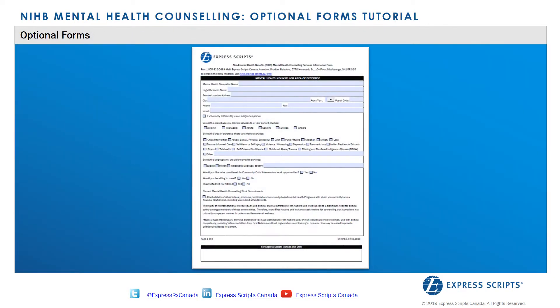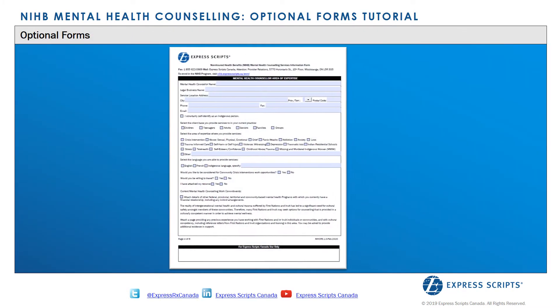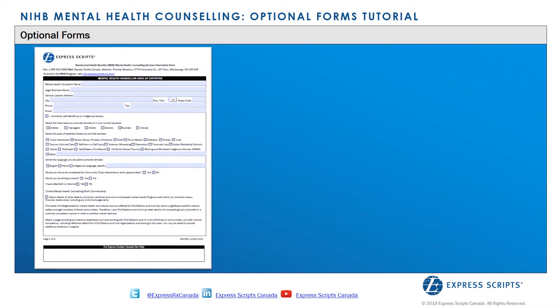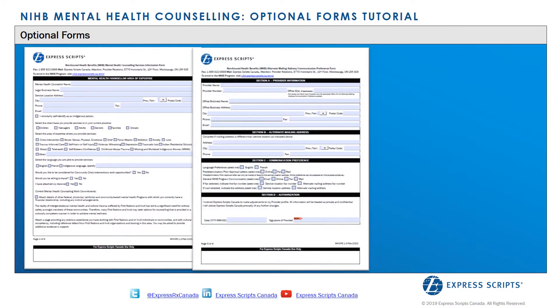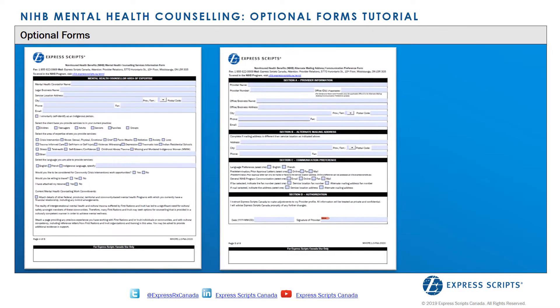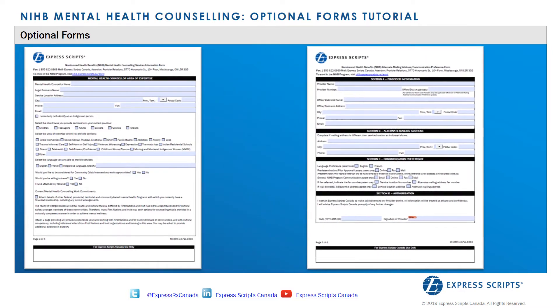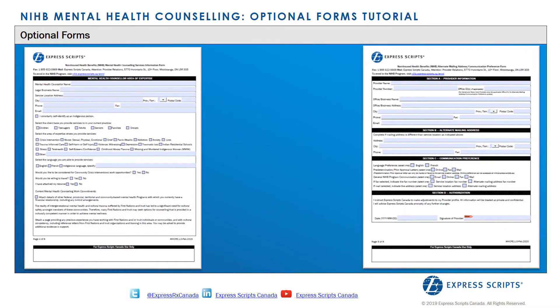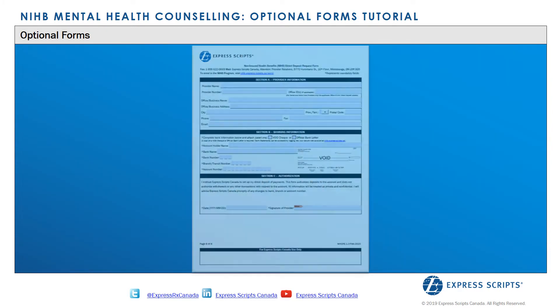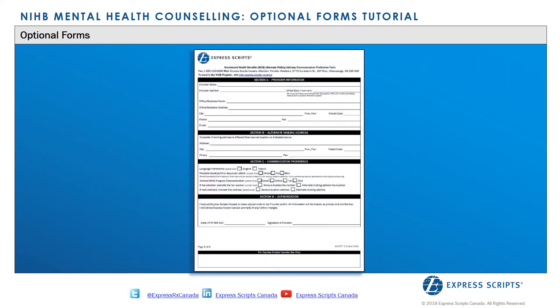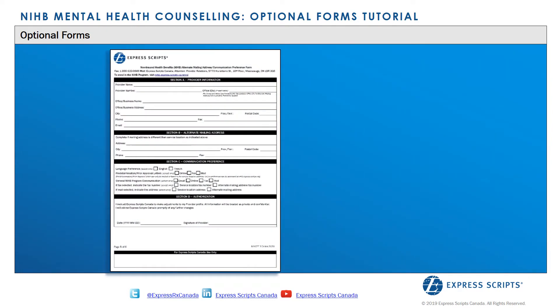The three optional forms within the Mental Health Counseling Enrollment Package allow providers to specify their area of expertise, an alternate mailing address and preferred method of communication, and lastly, banking information for direct deposits.